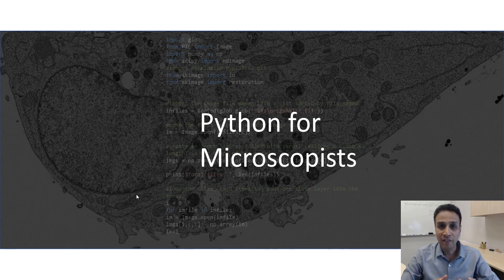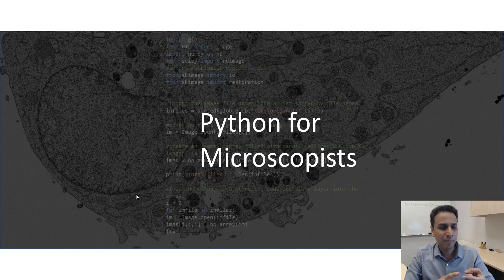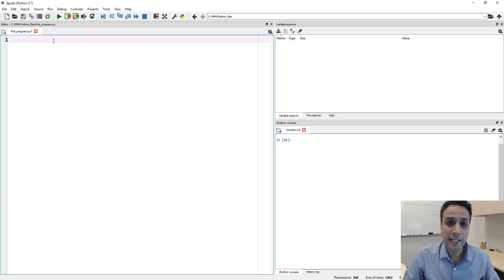Hey guys, this is Srini and you're watching Python tutorial videos on my channel, Python for Microscopists, on YouTube. In today's tutorial, let's continue talking about OpenCV, which is the library primarily dedicated to machine vision applications but has very good tools for image processing, even for microscope images. Today's lecture will focus on two topics: denoising or blurring, and edge detection — a couple of very important pre-processing operations you may need for image segmentation.